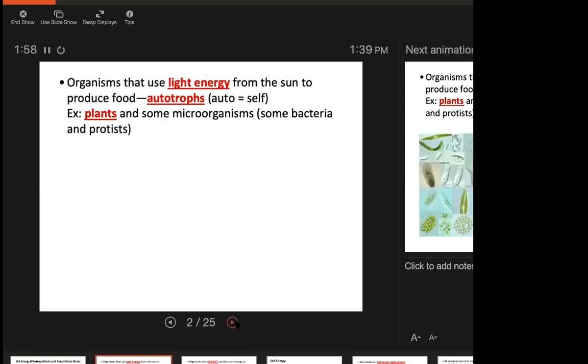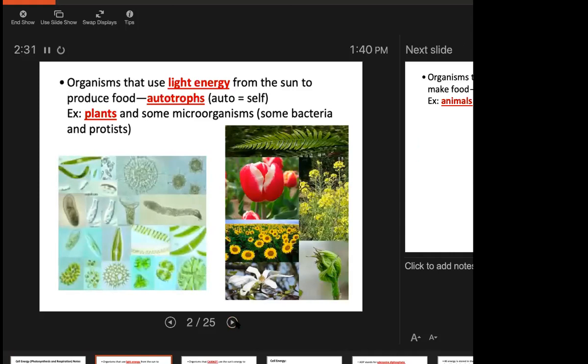Energy for living things comes from food, and originally all of the energy in that food can be traced back to the sun. Now, organisms in that first level that use light energy are called autotrophs. Auto means self for our purposes here. And an autotroph is an organism that creates sugar for itself using sunlight. So examples of organisms that are autotrophs are plants, protists, and some bacteria.